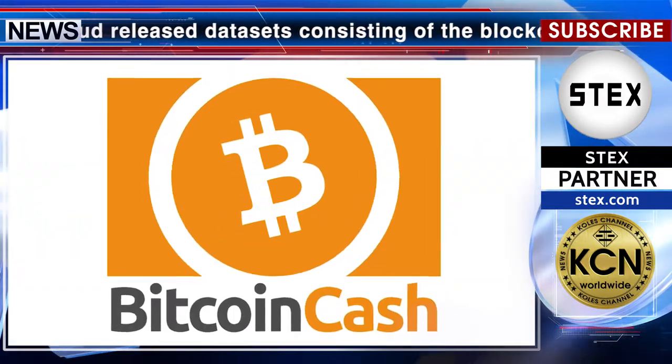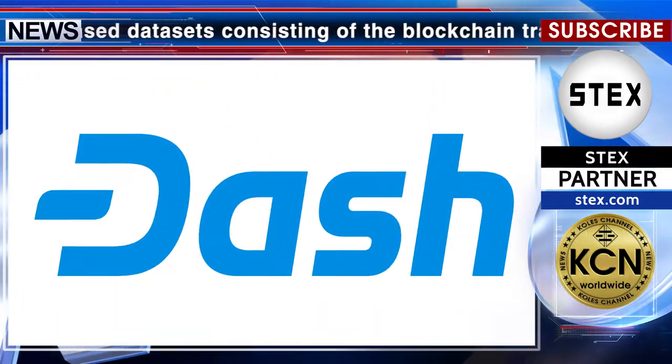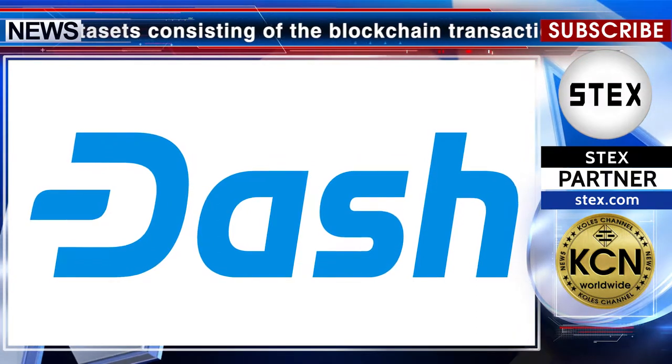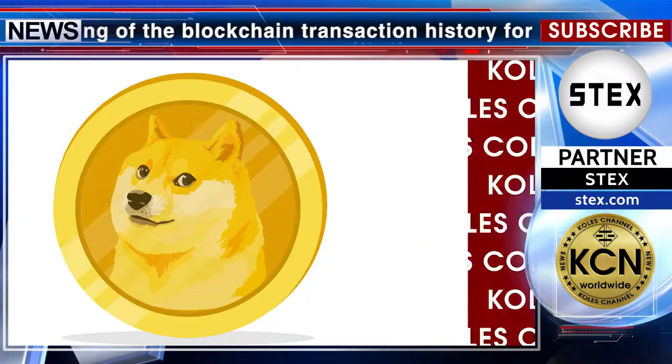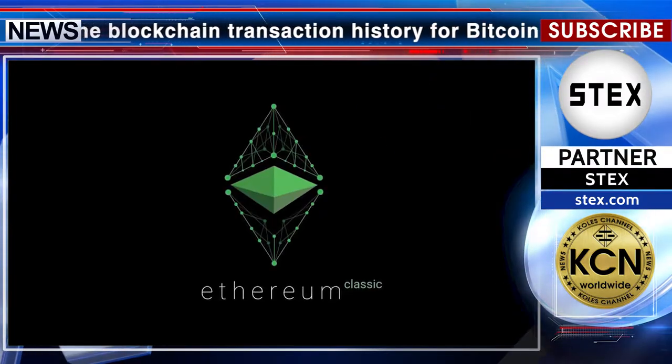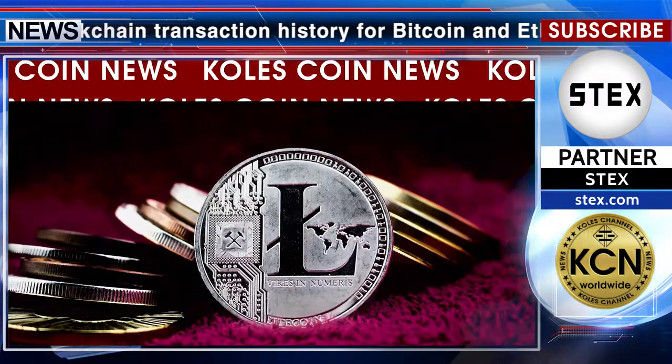The six cryptocurrency blockchain datasets we're releasing today are Bitcoin Cash, Dash, Dogecoin, Ethereum Classic, Litecoin, and Zcash.